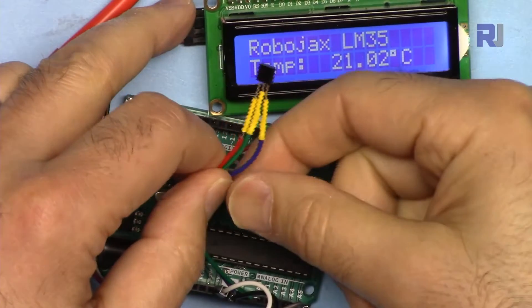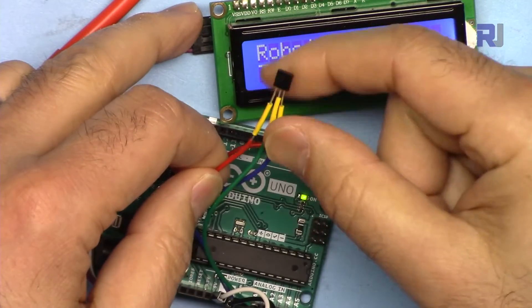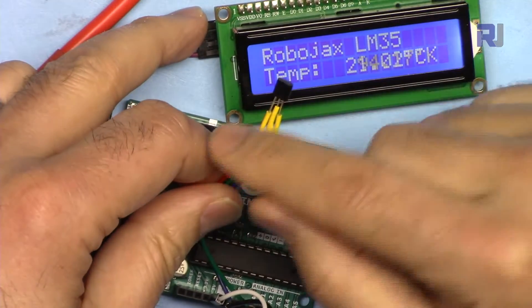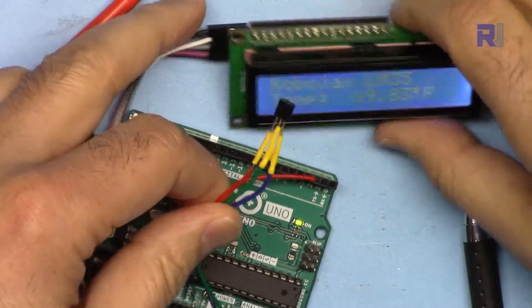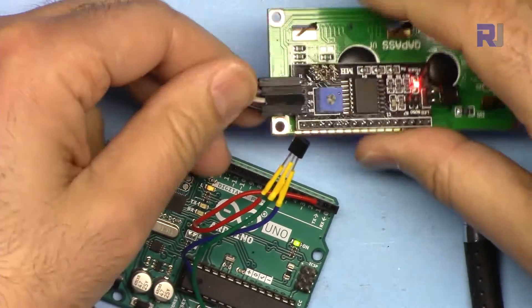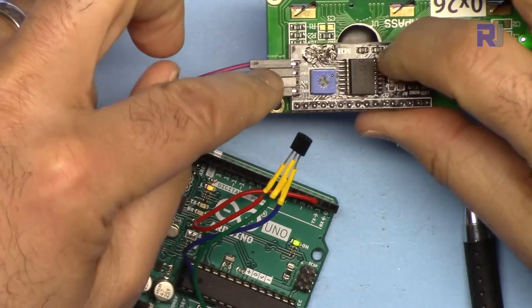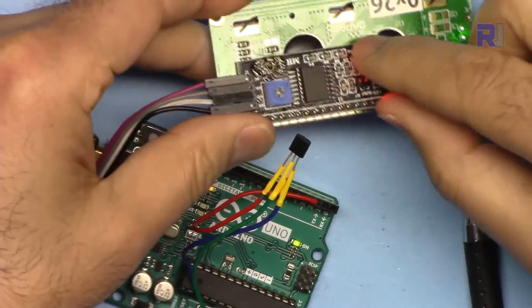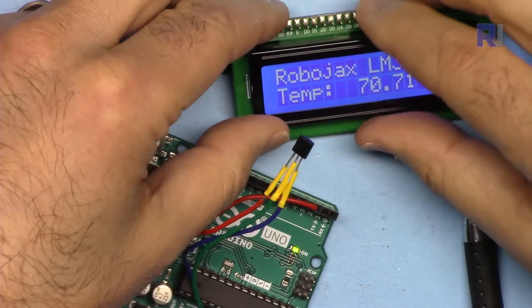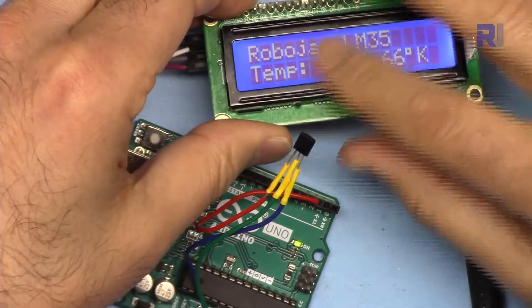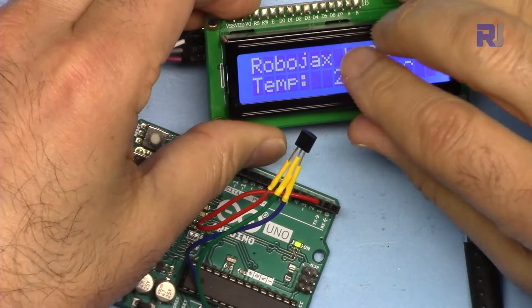I have separate video introducing this LM35 with full detail and specification and how to use it. I also have a separate video showing how to use this LCD 1602 or 2004 with just four wire because it has this I2C module. So make sure to use this separately, download the library, and make sure that you are able to display text on this.